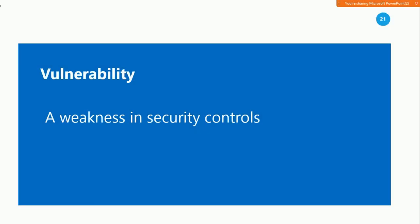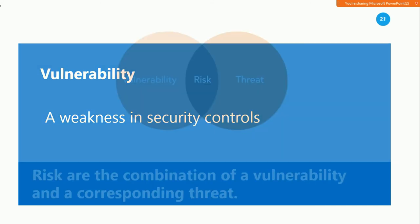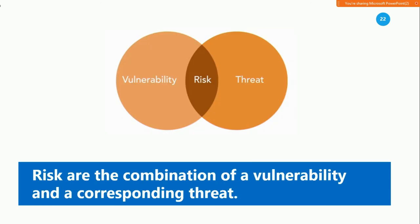Vulnerabilities are weaknesses in our security controls that a threat might exploit to undermine the confidentiality, integrity, and availability of your information or systems. These might include missing patches, misconfigured firewall rules, or other security misconfigurations. You do have control over the vulnerabilities in your environment, and security professionals spend much of their time hunting down and remediating vulnerabilities. Risk occurs when your environment contains both a vulnerability and a corresponding threat that might exploit that vulnerability. For example, if you haven't updated your antivirus signatures recently and a hacker releases a new virus on the internet, you face a risk — you are vulnerable because you are missing a security control, and there is a threat: the new virus.